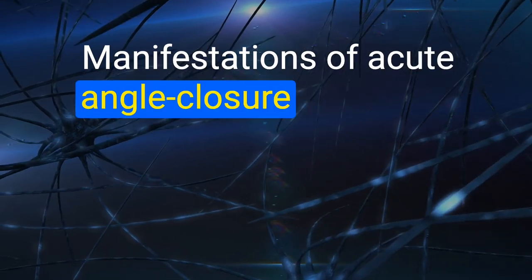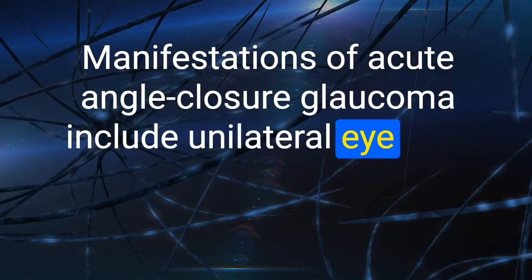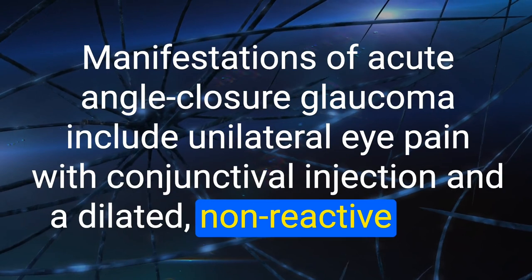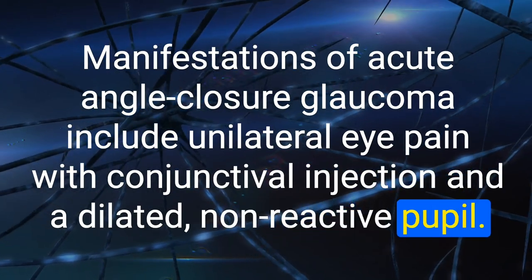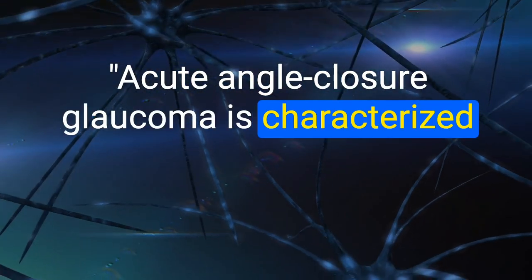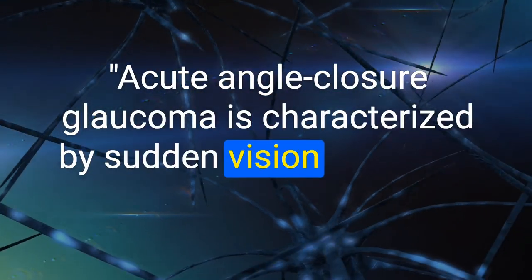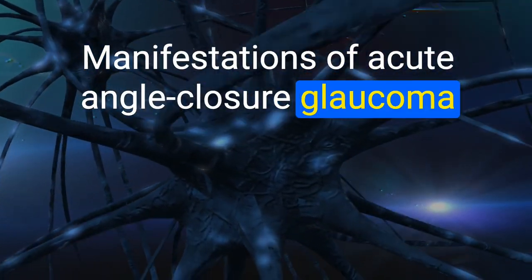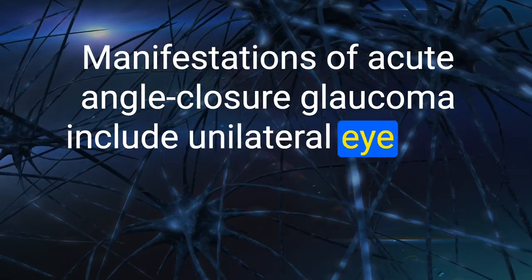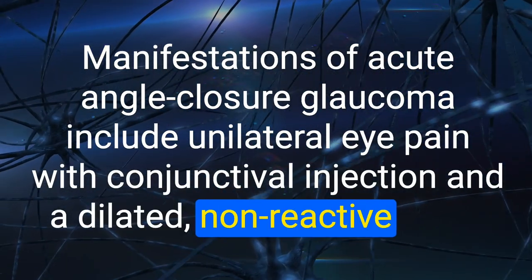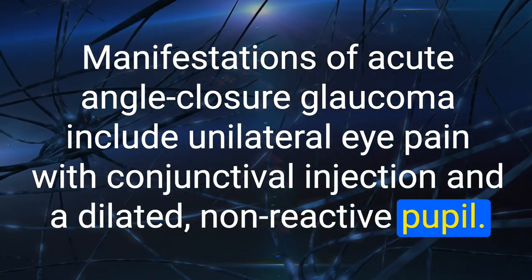71-73. Manifestations of acute angle-closure glaucoma include unilateral eye pain with conjunctival injection and a dilated, non-reactive pupil. It is also characterized by sudden vision loss with halos around lights.